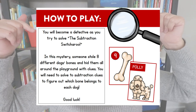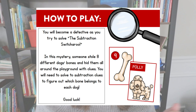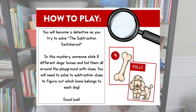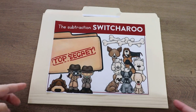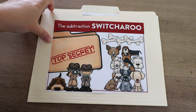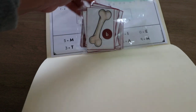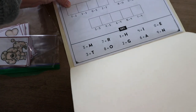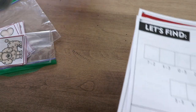High engagement activity number two are math mysteries that I created last year. Here is an example — the subtraction switcheroo. You become a detective as you try to solve the mystery: somebody stole eight different dogs' bones, hid them all around a playground with clues, and you have to solve the subtraction clues to figure out which bone belongs to each dog. These are available in a printable version where you store them in a file folder for students to solve the case. They're also preloaded into Google Slides and Seesaw so students can do them independently spread out over a week.